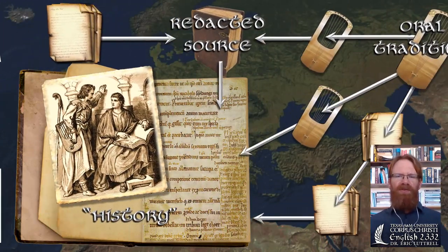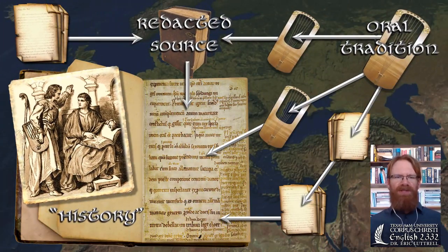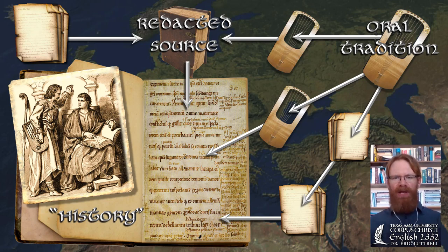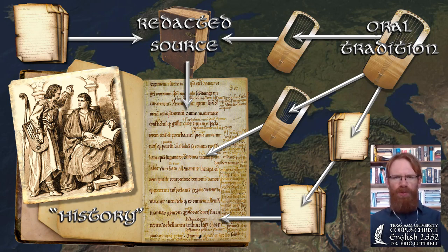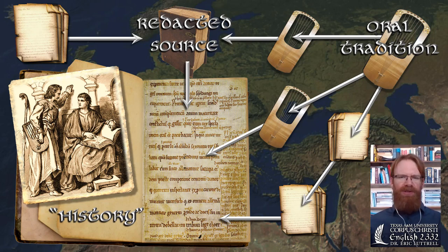To create that definitive form, Saxo is redacting lots of different sources — some from oral tradition, some from other written texts. A redactor has to reconcile discrepancies between parallel accounts: if you have two different accounts of the same story, which one do you go with? Do you try to combine them both, or change one?